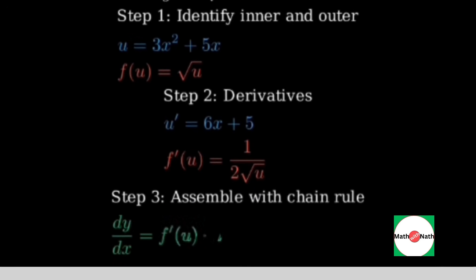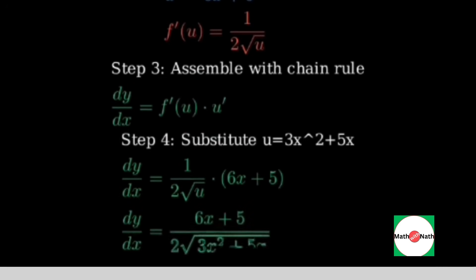Step three, assemble with the chain rule. dy/dx equals f prime of u times u prime. Step four, substitute back u equals 3x squared plus 5x and simplify.